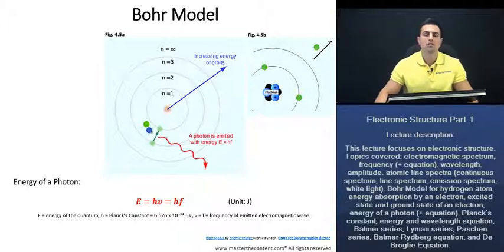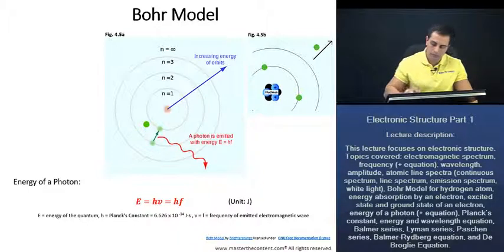And a common analogy used to illustrate this point is if you think of a flight of stairs, you're either going to be on one step or the other. You're not going to be standing in between steps. Similarly, with electrons, they're going to be in one orbit or the other. We'll just get rid of this here.